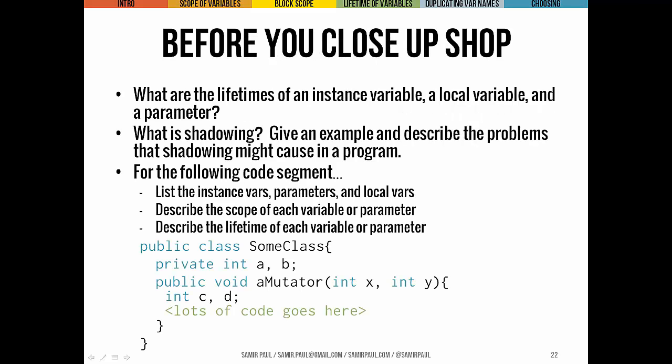Before we close, make sure you can talk about the lifetime of an instance variable, a local variable, and a parameter, and describe their uses. Also be able to explain what shadowing is, give an example of when it happens, what the problem is, and what you must do to counteract it — specifically using `this`. Finally, look at the provided code segment and identify the instance variables, parameters, and local variables, and describe the scope and lifetime of each.